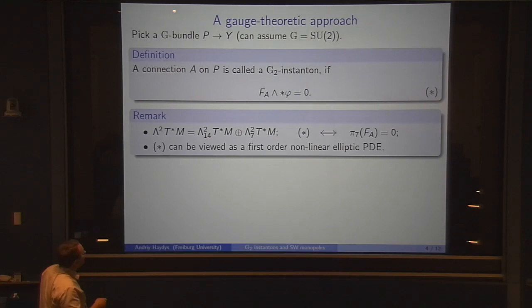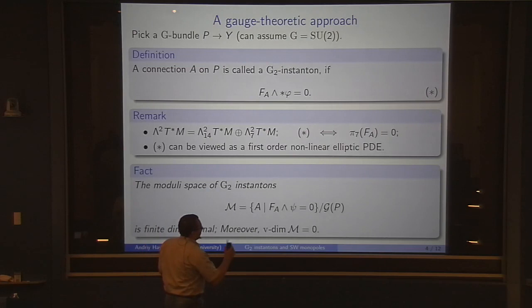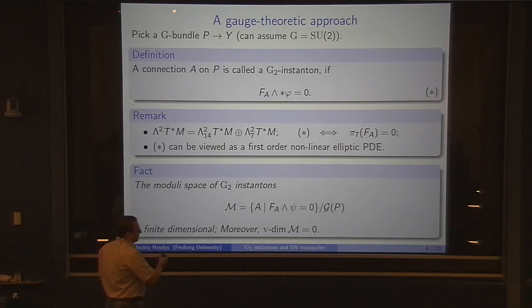The equation says that the seven-dimensional piece of the curvature vanishes. This can be viewed as a first-order nonlinear elliptic partial differential equation. Essentially, a corollary is that the moduli space of G2 instantons has finite dimension, and moreover the virtual dimension of M is zero, because we are on an odd-dimensional manifold.